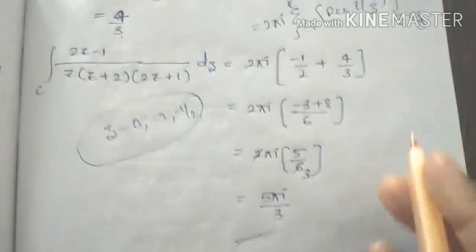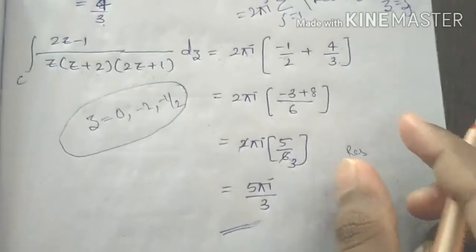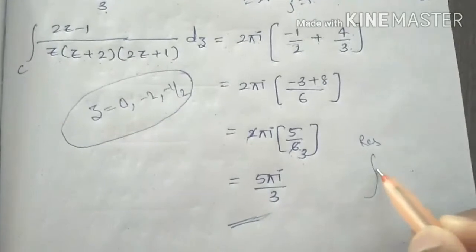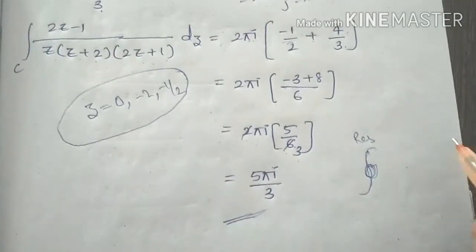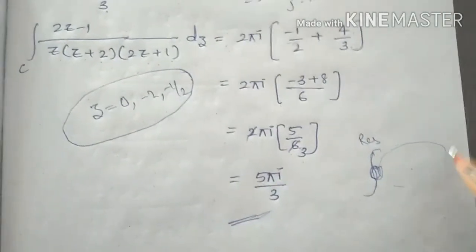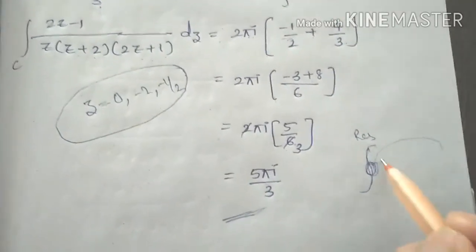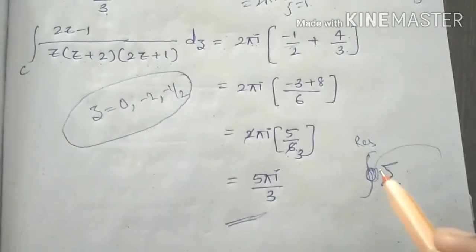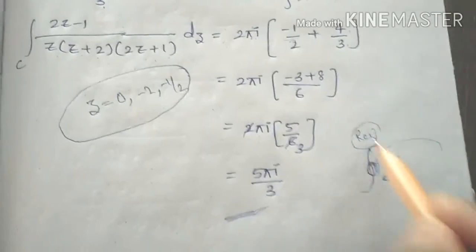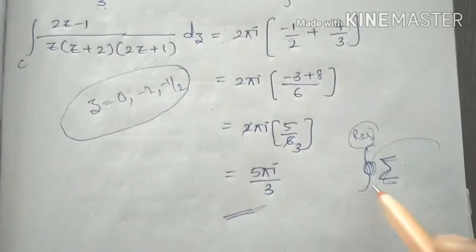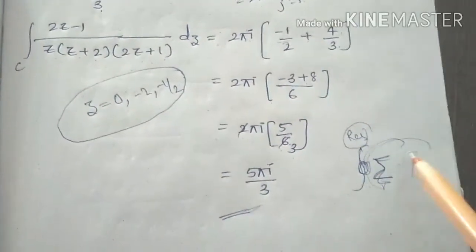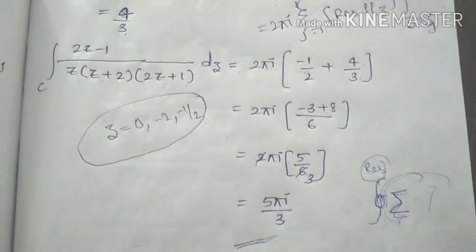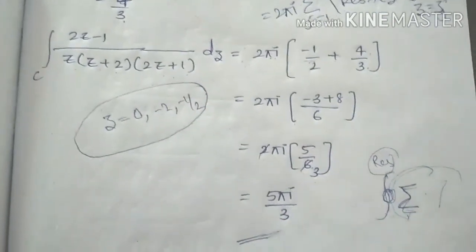To summarize the residue theorem method: find the poles separately, then find each residue. The residue theorem states that the integration equals 2πi times the sum of all residue values inside the contour. Thank you for watching this channel.